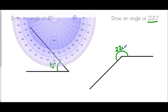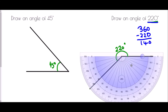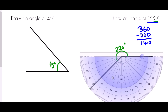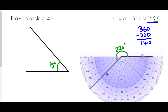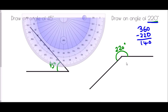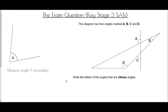The other version: if we know it is a reflex angle of 220 degrees, we do 360 take away 220, which leaves 140 degrees. With my protractor, I draw an angle of 140 degrees on the inside. Once I've drawn the 140 degrees, I mark the outside of it as 220 degrees — and that forms the same angle.